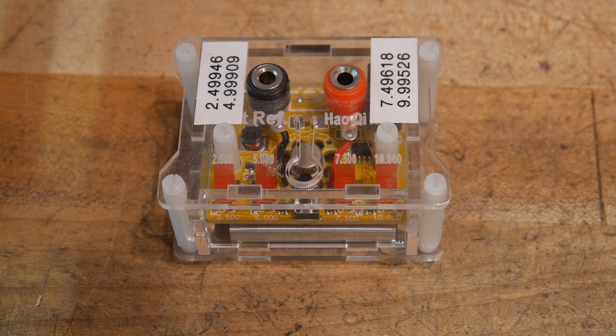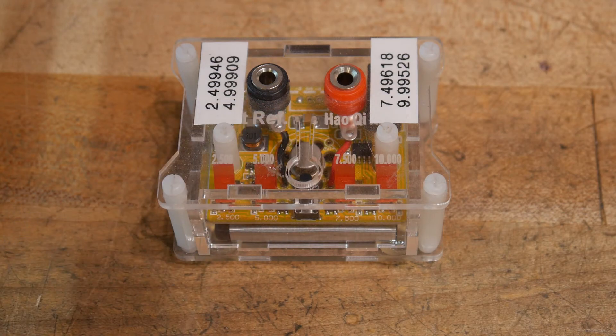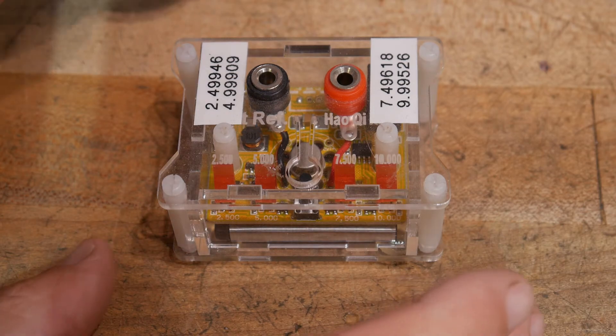Okay, well I got obsessed with calibrating things in my lab, so I bought one of these off of eBay. They go for about $17.